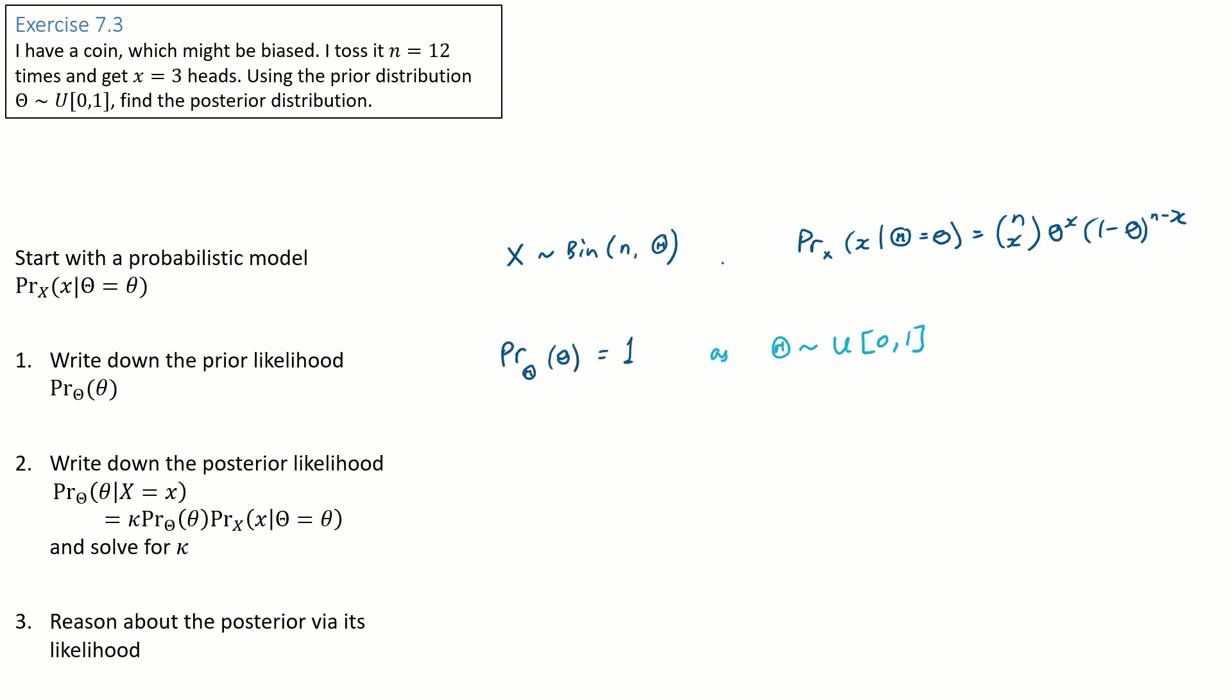Our probability model for the data is exactly the same as before. It's just the next three steps that are different. Step one, write out the prior likelihood function. The question tells us that the prior distribution for theta is uniform in the range zero to one. So the prior likelihood function is constant equal to one.